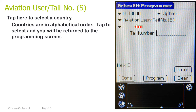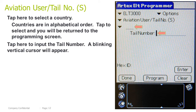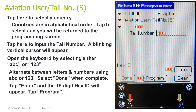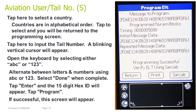Aviation user tail number short: tap here to select a country — countries are in alphabetical order; tap to select and you will be returned to the programming screen. Tap here to input the tail number; a blinking vertical cursor will appear. Open the keyboard by selecting either ABC or 123. Alternate between letters and numbers using ABC or 123. Select done when complete. Tap Enter and the 15-digit hex ID will appear. Tap Program. If successful, this screen will appear.